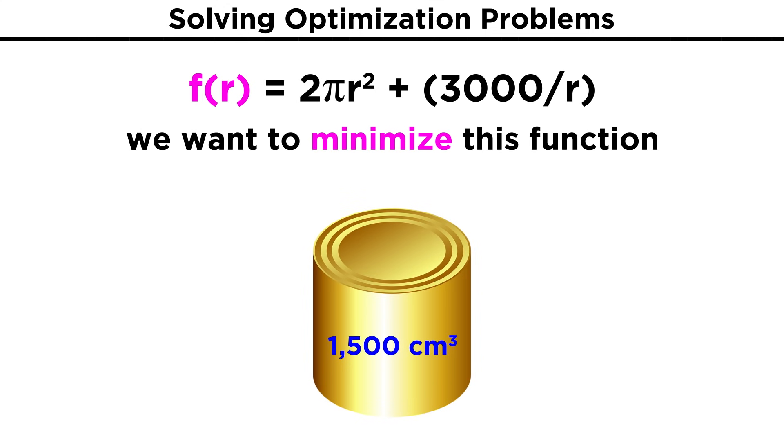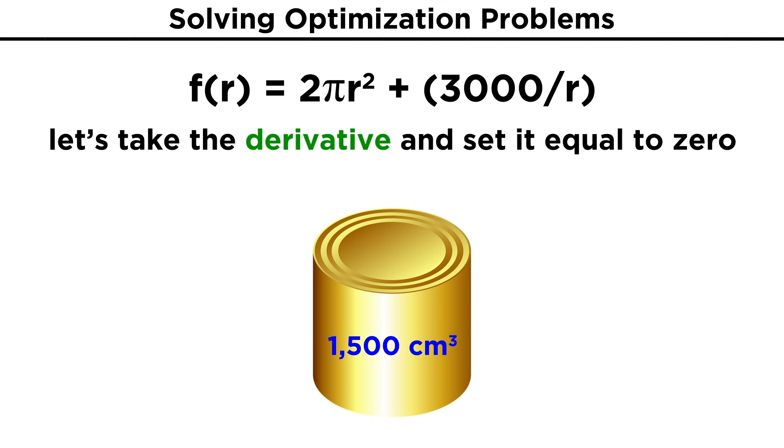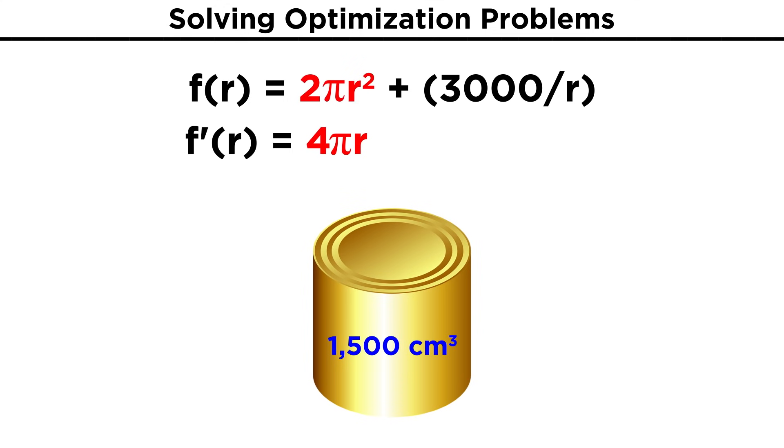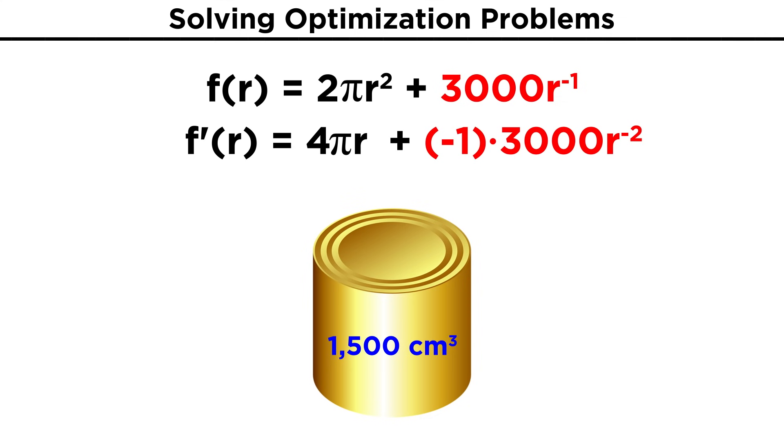Now, if this is the equation that gives us the surface area of the can in terms of its radius, and we want to minimize this function, or find the smallest amount of material that will yield this volume, all we have to do is take the derivative and set it equal to zero. The derivative of the first term is 4πr. And then for this second term, if we rewrite this as 3000r⁻¹, we get negative one times 3000r⁻². So we end up subtracting 3000/r².